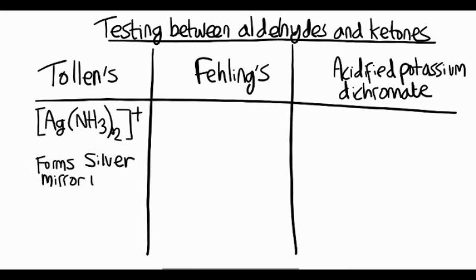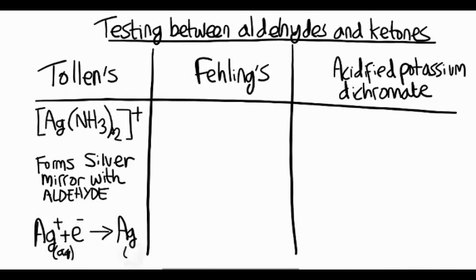Now, the reason it happens is that the silver plus ion is a mild oxidizing reagent, and when it oxidizes the aldehyde, it itself is reduced, which means it gains an electron to become silver as a solid, and that forms on the inside of the test tube.